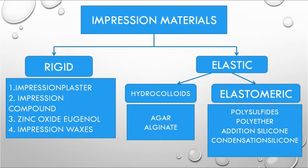Classification of impression materials: Rigid — impression plaster, impression compound, zinc oxide eugenol, and impression waxes. Elastic — divided into two parts: hydrocolloids, which are agar and alginate; and elastomeric, which are polysulfides, polyether, addition silicone, and condensation silicone.